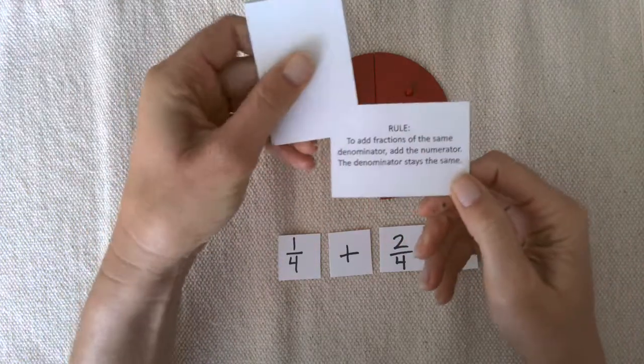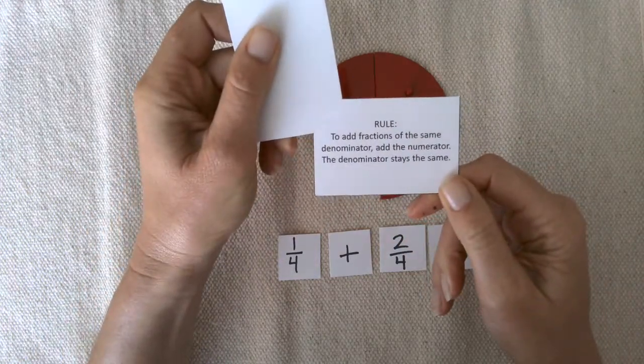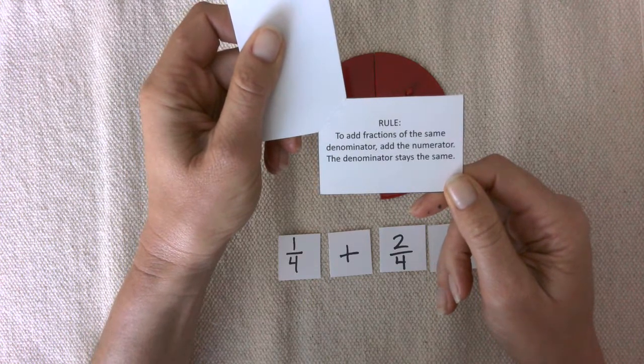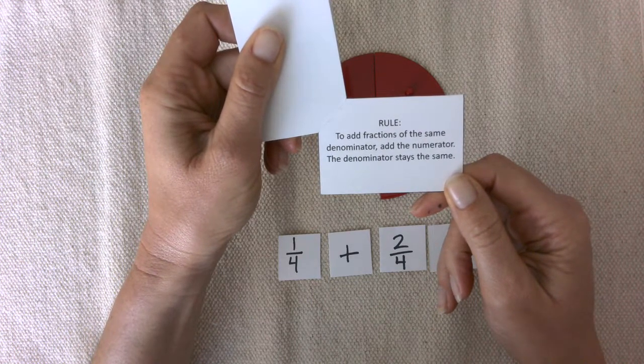The rule is to add fractions of the same denominator, add the numerator. The denominator stays the same.